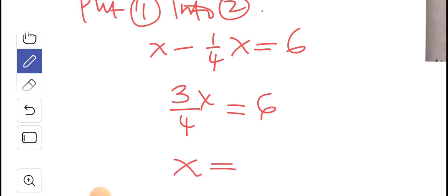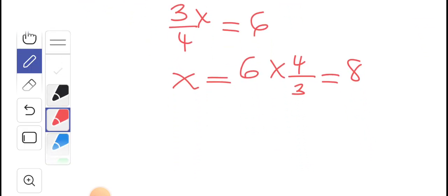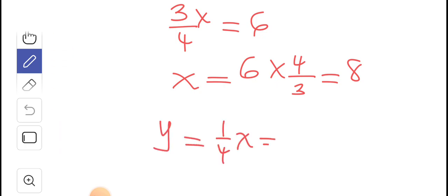And solving for x, we're able to see that x is 6 by 4 over 3, and that is 8. Okay, so which means that x is 8. But we remember that y is 1 quarter of x, which means it is 1 quarter of 8. 1 quarter of 8 is 2.